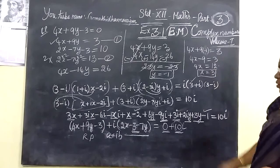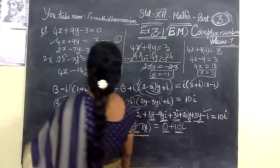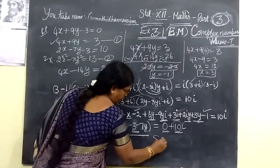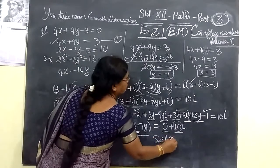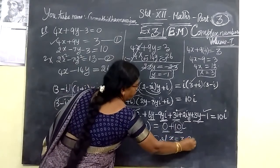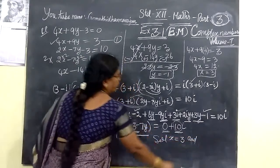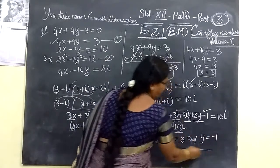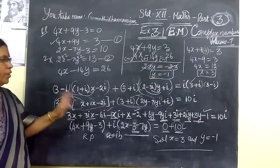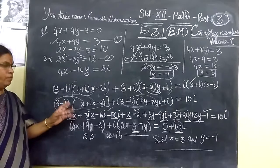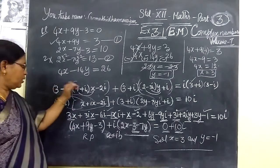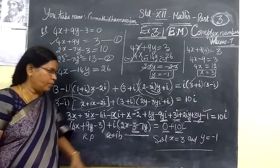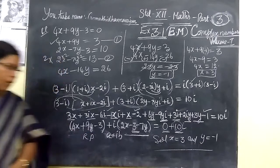Therefore the solution is x equals 3 and y equals minus 1. This is very, very easy — the only thing is you should be very careful with the imaginary unit i when expanding inside the brackets.